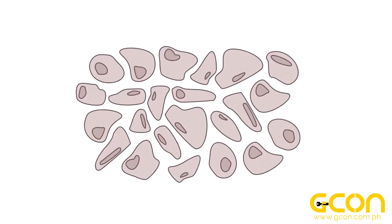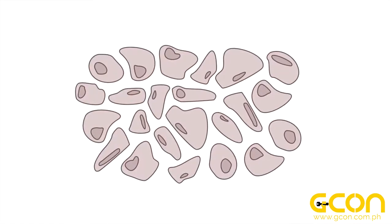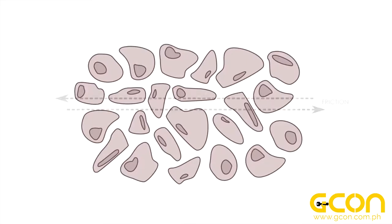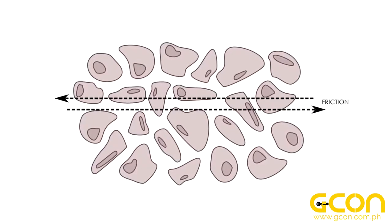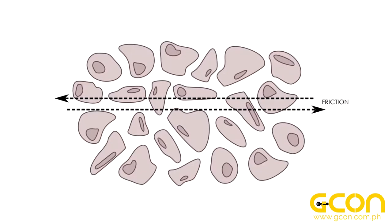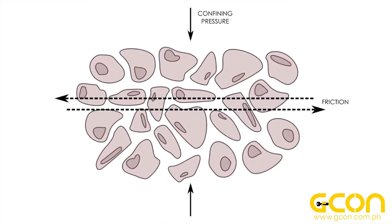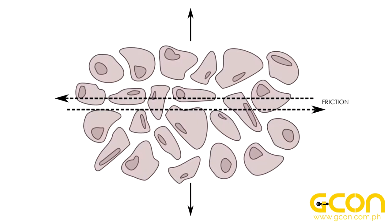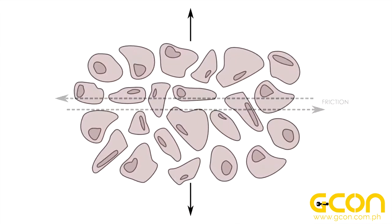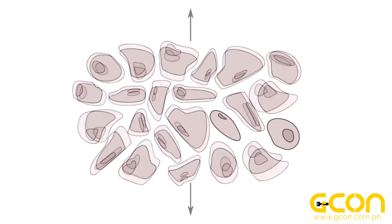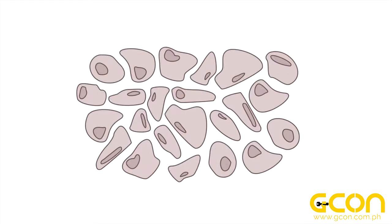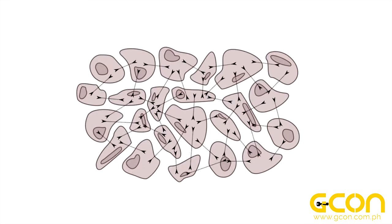Soil and rock are no different. You can imagine soil as a collection of individual particles. The only reason a soil mass has any strength at all is because of the friction between those particles. But friction is a function of the force pressing the particles together. So if you instead reverse that force and pull the particles apart, the soil loses all its strength. Some soils, like clay, do have a certain amount of natural attraction between particles, called cohesion, but it's not enough on its own to resist significant forces.